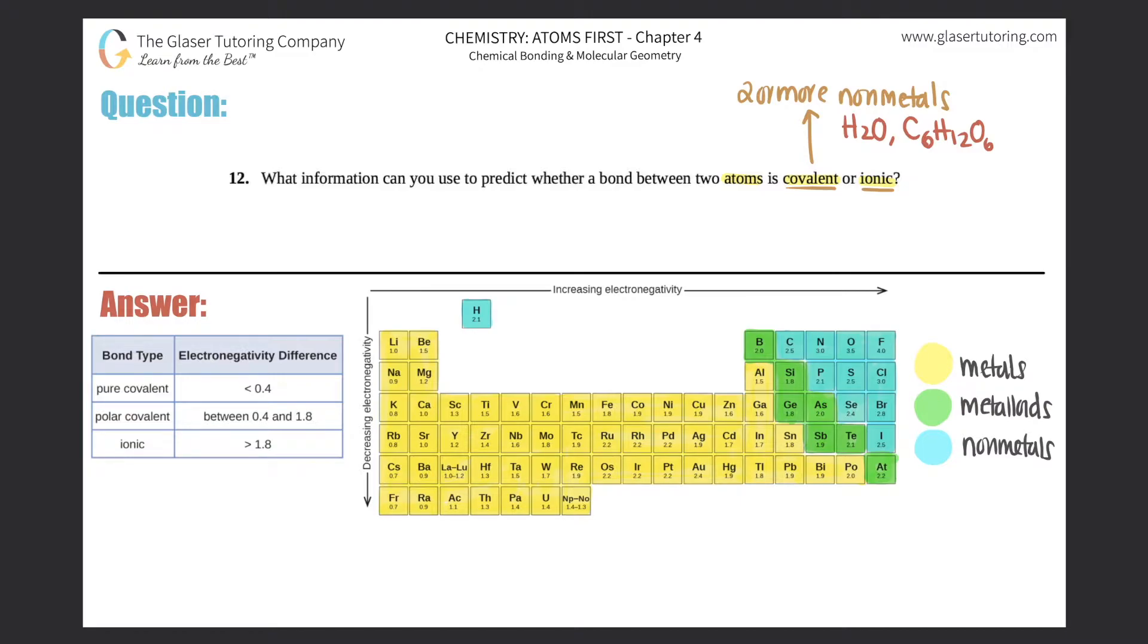Ionic compounds, on the other hand, are between a metal and a non-metal. So that's one criteria. So you have to have a metal and you have to have a non-metal respectively. Remember, no two metals can come together. So sodium cannot react or come together with potassium to try to make an ionic compound. It's just not going to happen.